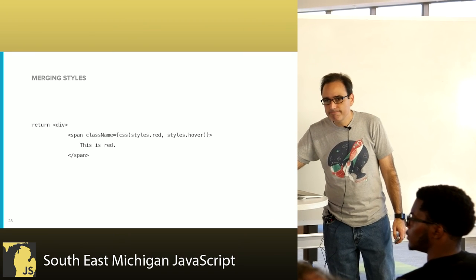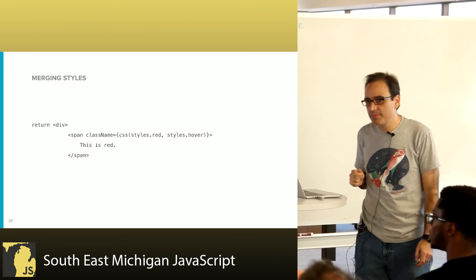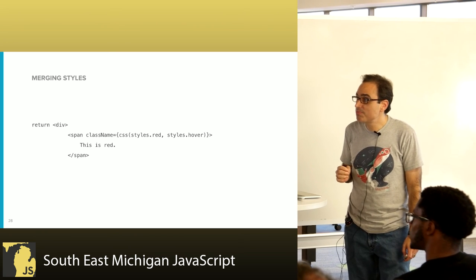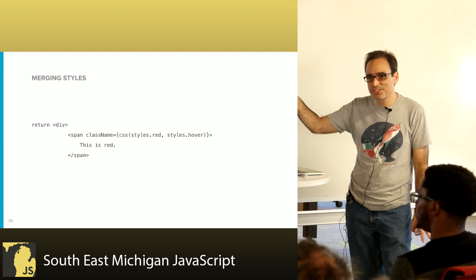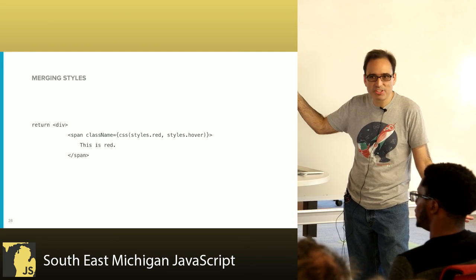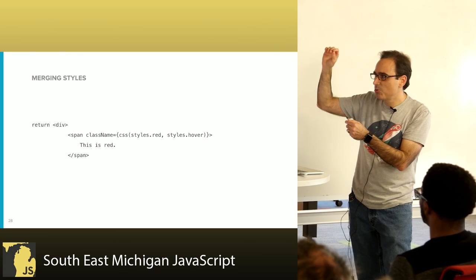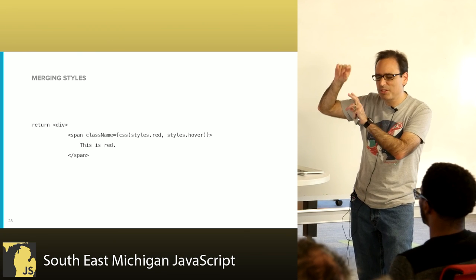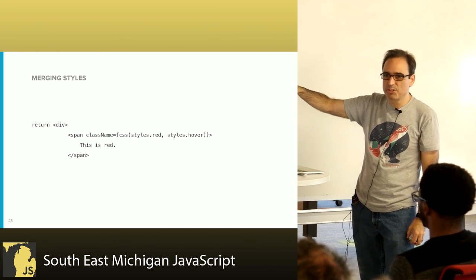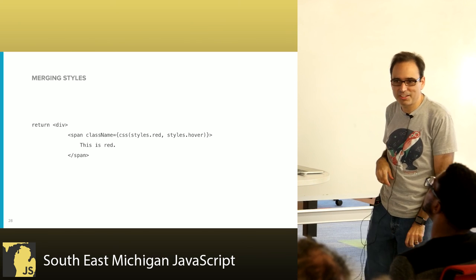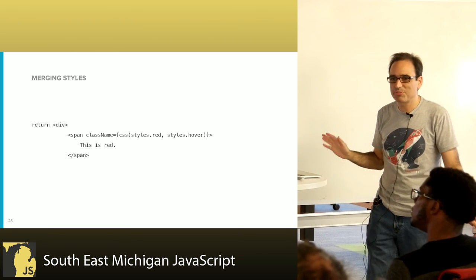What's the semantics of this — is this only red when you're hovering? Well, this works just as if you had applied those two classes through normal CSS. If you had made a CSS class that's red and another one that's hover and applied both those class names to this node, it works exactly like that.